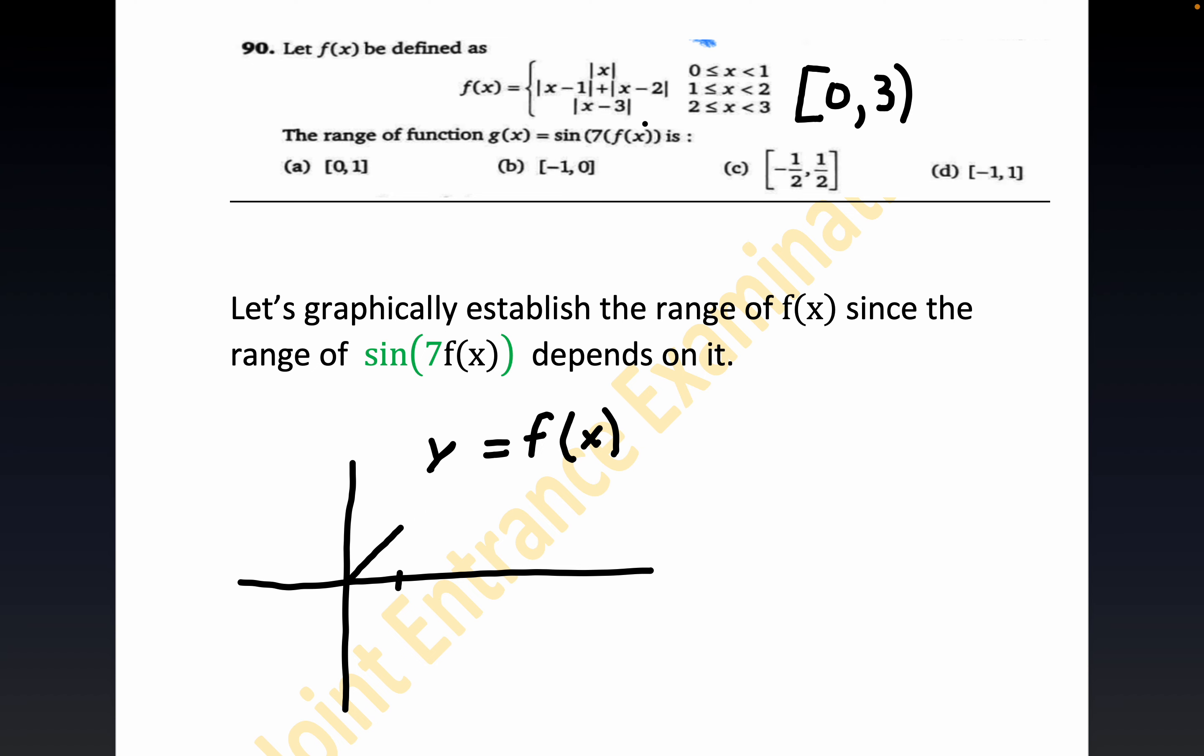Notice it says for less than one, so technically there would be an open circle right there. But notice when you substitute one in here, you also get one back. If you substitute one right here, you get zero. Then the absolute value of one minus two is the absolute value of negative one, which is one. And so what we get is a graph that looks something like this.